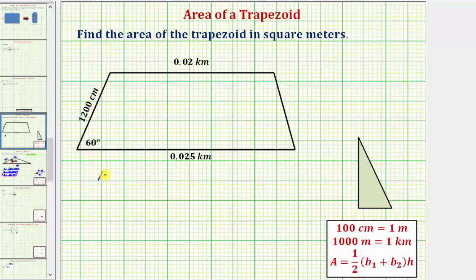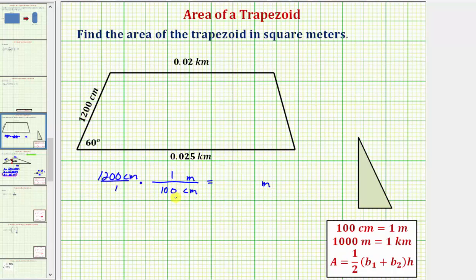We'll write 1,200 centimeters as a fraction with a denominator of one, then multiply by a unit fraction — a fraction equal to one — to convert centimeters to meters. Because we don't want centimeters in our answer, we write centimeters in the denominator and meters in the numerator. The conversion is one meter equals 100 centimeters. The units of centimeters simplify out, and 1,200 divided by 100 gives us 12 meters.